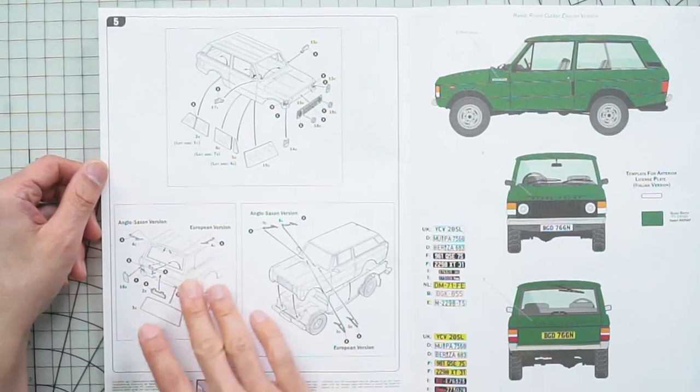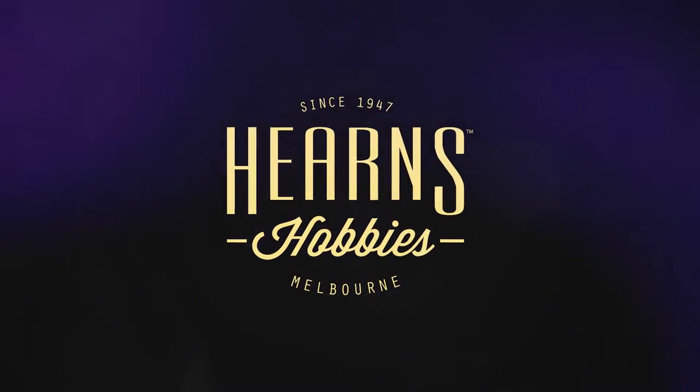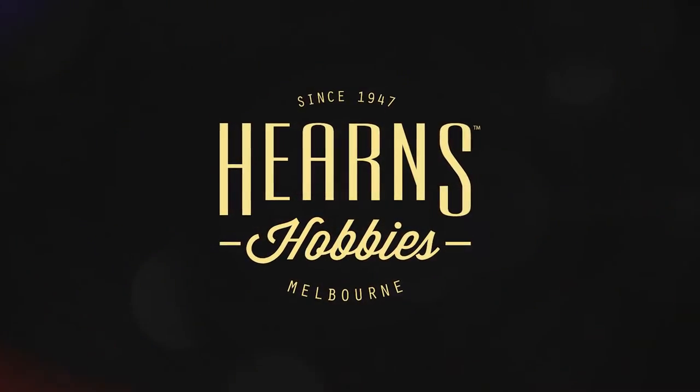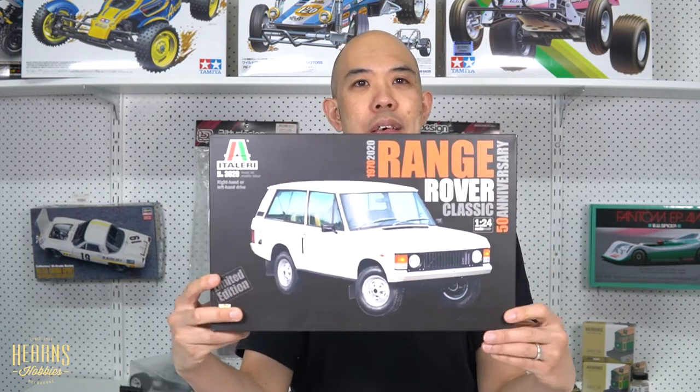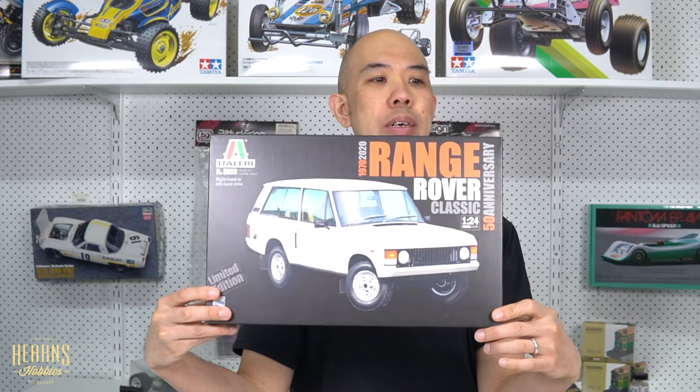This is the 50th anniversary kit, which was released as a limited edition, and it's really nice. Hello, this is Vijay from Hearn's Hobbies, and I'm going to be looking at this Italeri kit. This is the Range Rover Series 1.